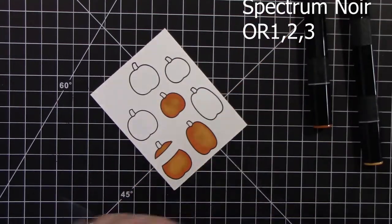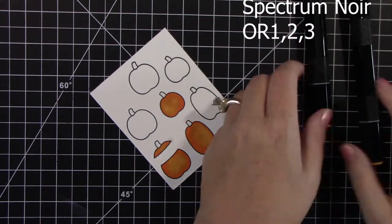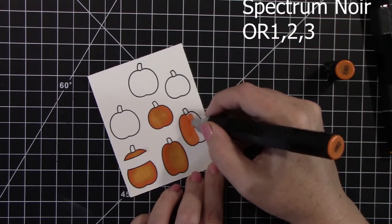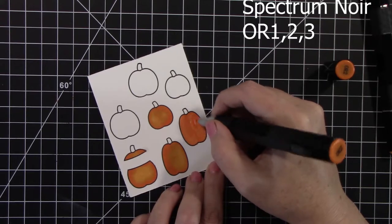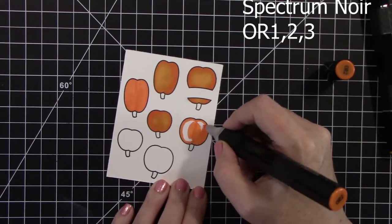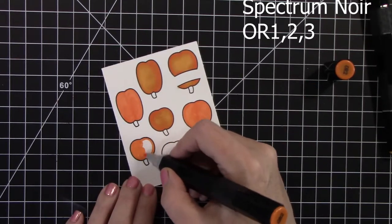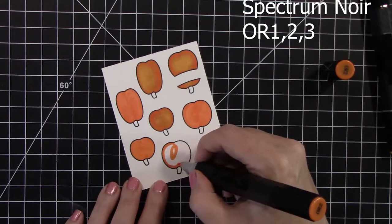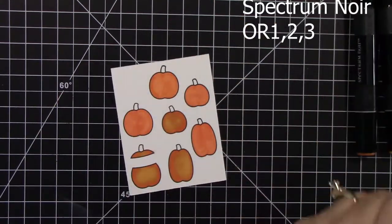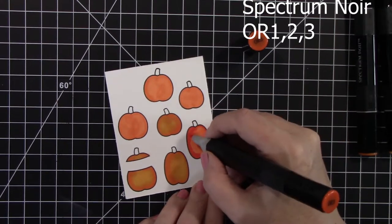And then the next set of pumpkins, I will start with a base of OR2 and then highlight with OR3. So it gives a little bit of a different look. Just with three colors of markers. Super simple, super fun to color. Really doesn't take any time at all. I loved this card.